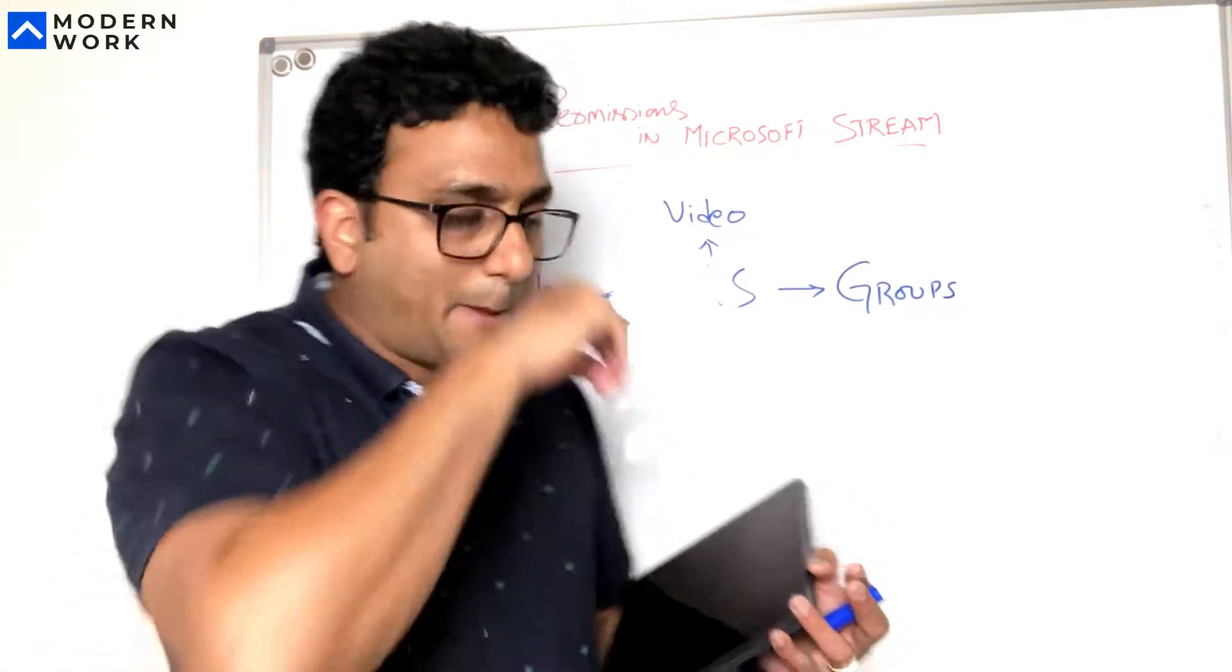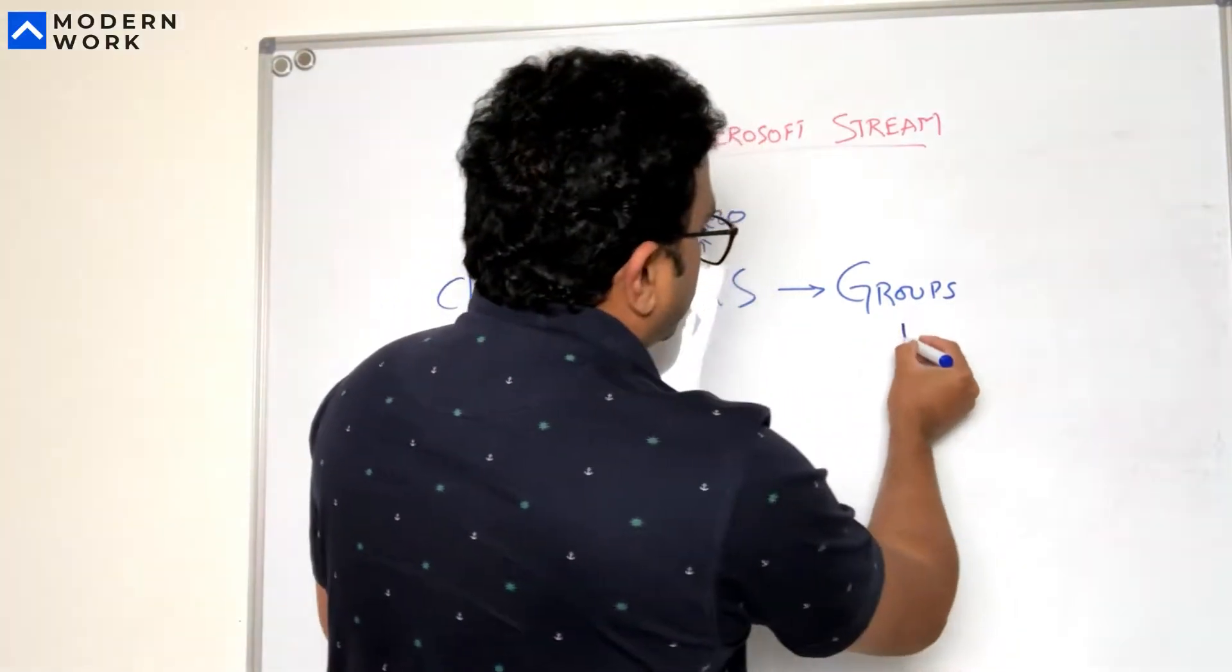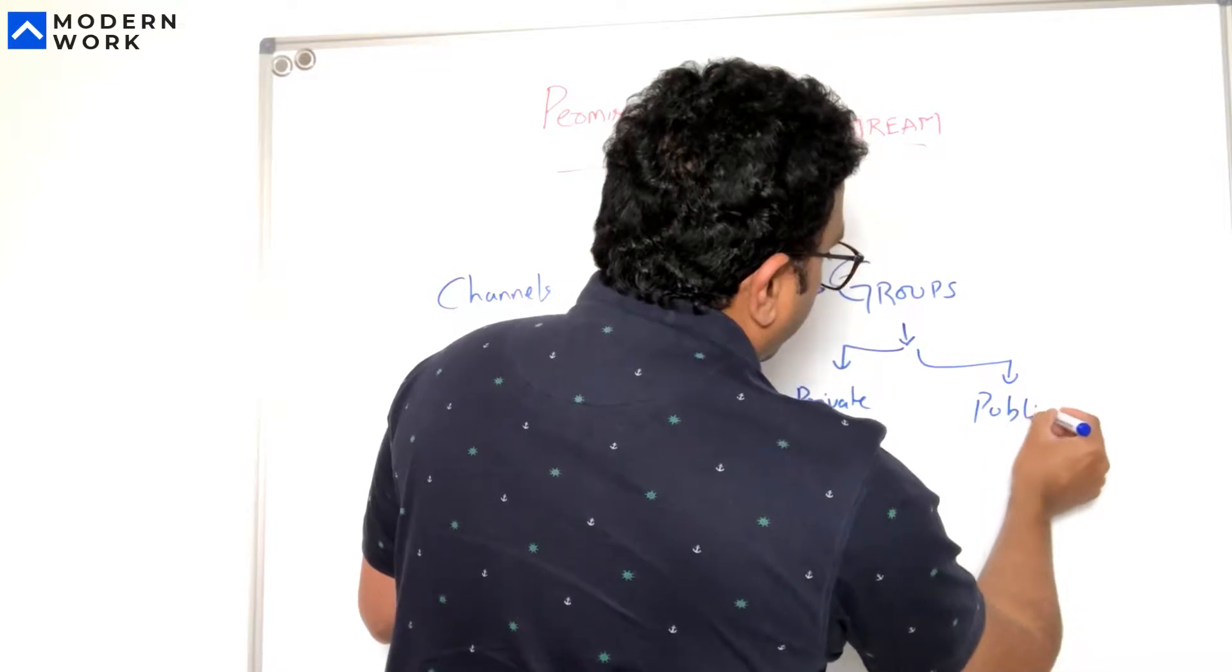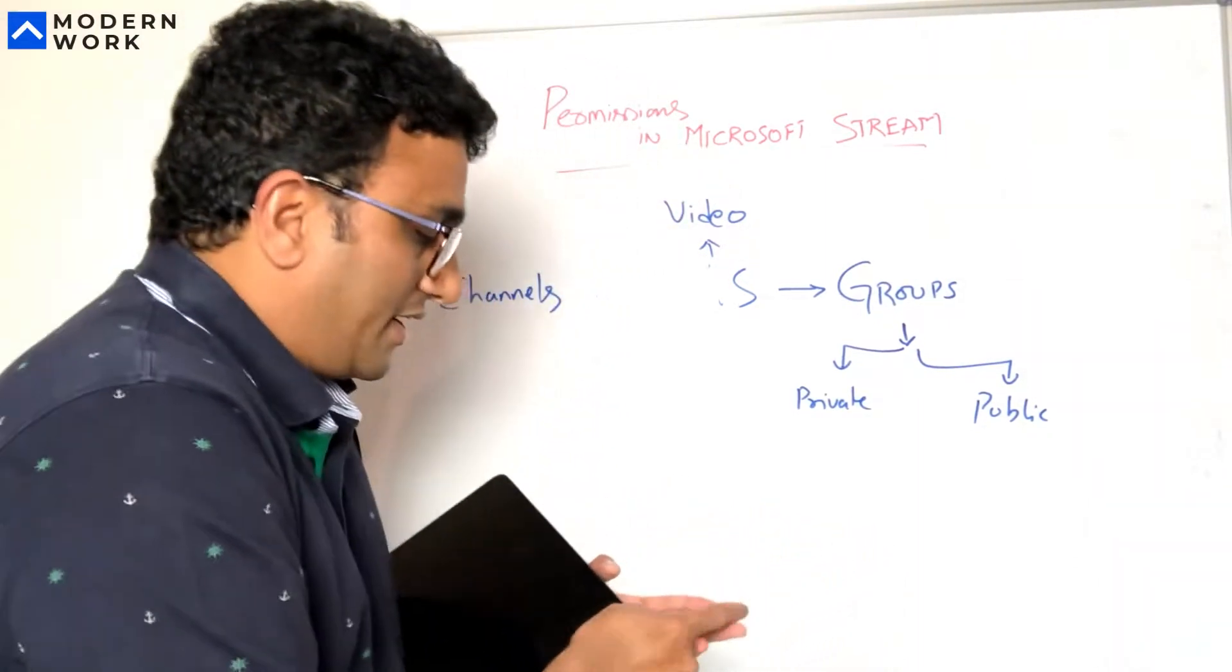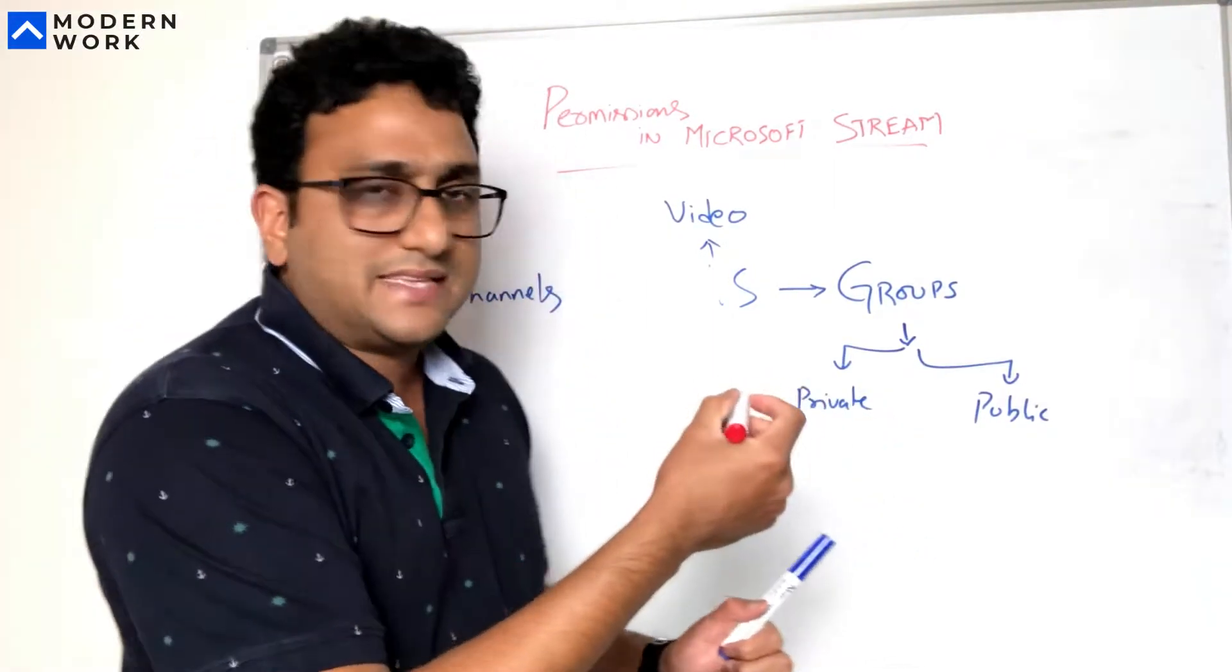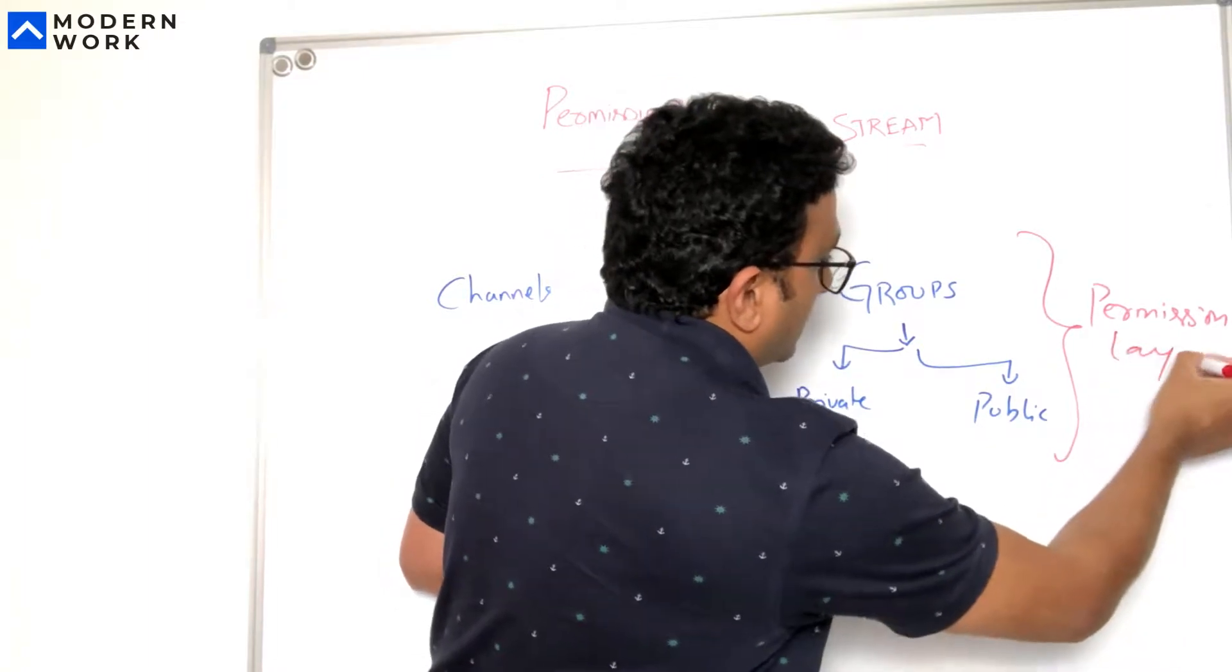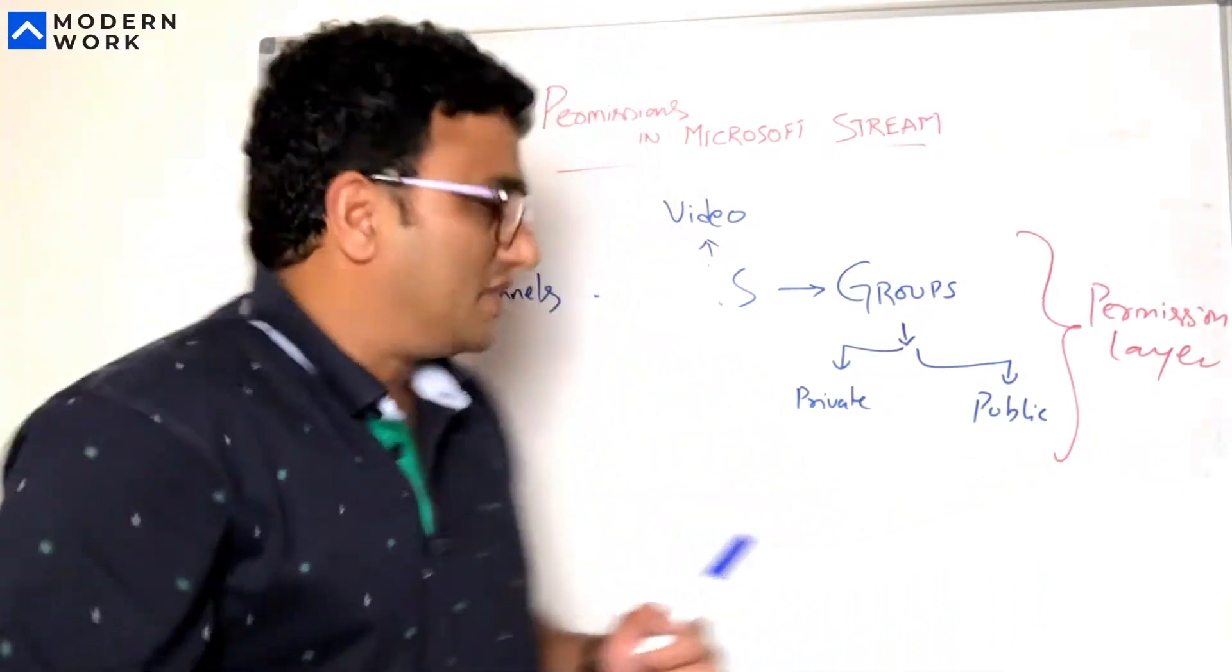In the videos itself, in groups we have two things - private group and the public group. Groups is more like a permissioning layer, okay, and channels is more like a categorization layer.